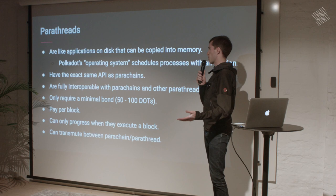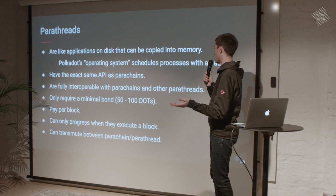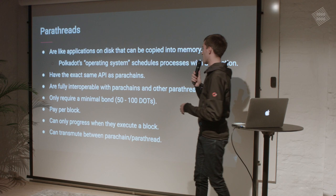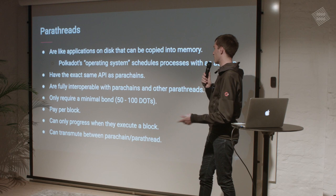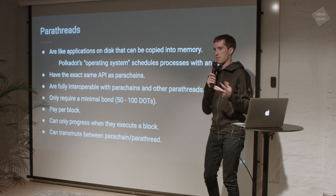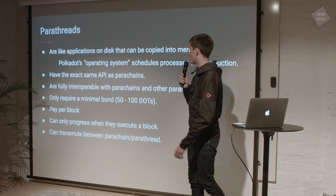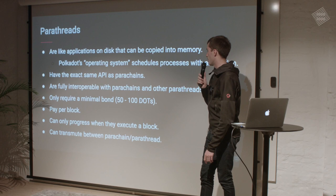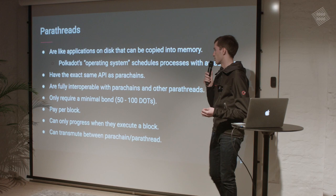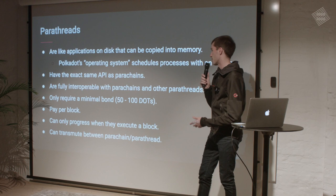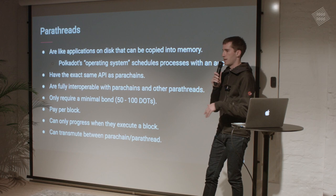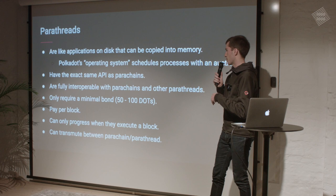These applications on disk can participate in an auction and basically ask the operating system to be let in — but you have to actually pay for this. Parathreads are basically parachains technically speaking. They have exactly the same API, they get the security, they can interoperate with other parachains or other parathreads, and they can switch between parachains and parathreads because they're basically the same. The only difference is that they're not bonding this really large number of dots. Instead, they pay per block — you pay a really small bond, like 50 or 100 dots, and then you pay for every block that you execute. You can only progress your chain when you execute a block in the relay chain.